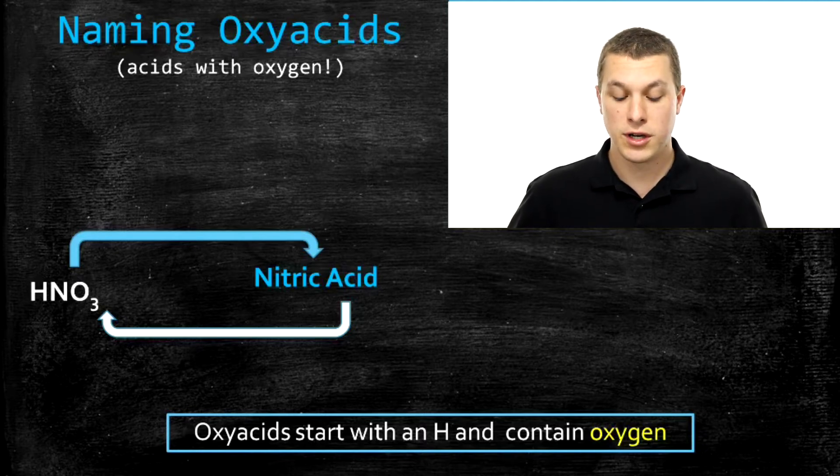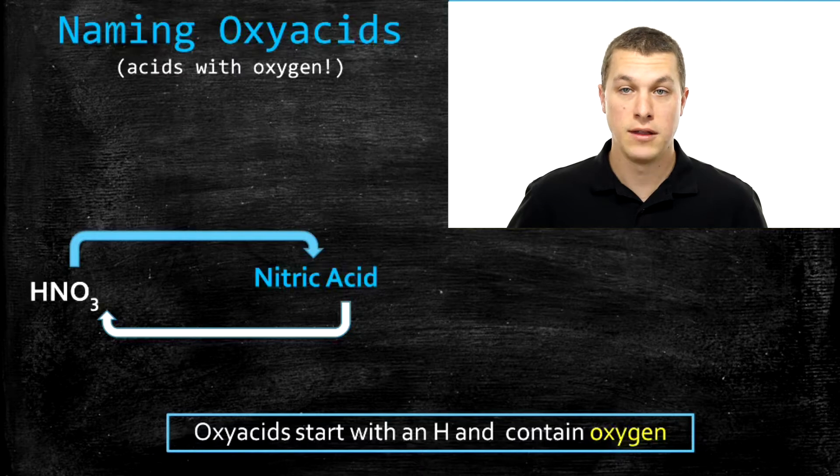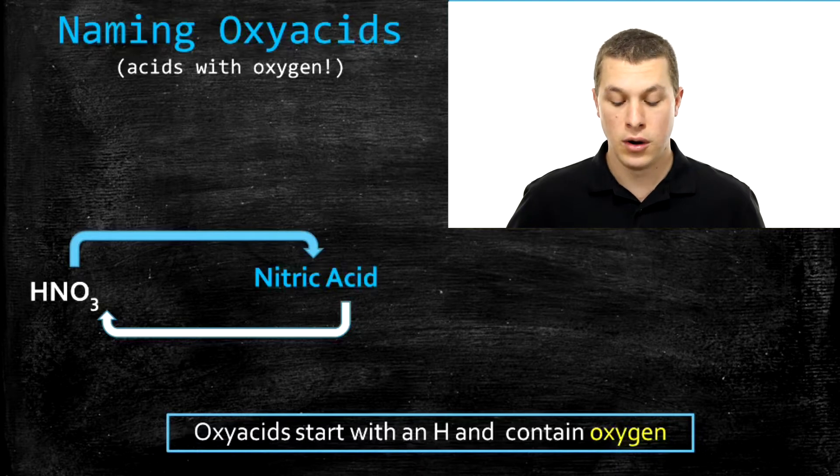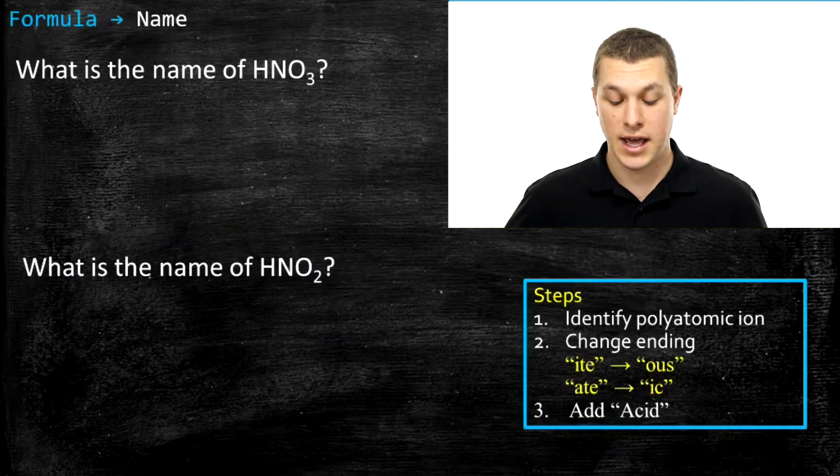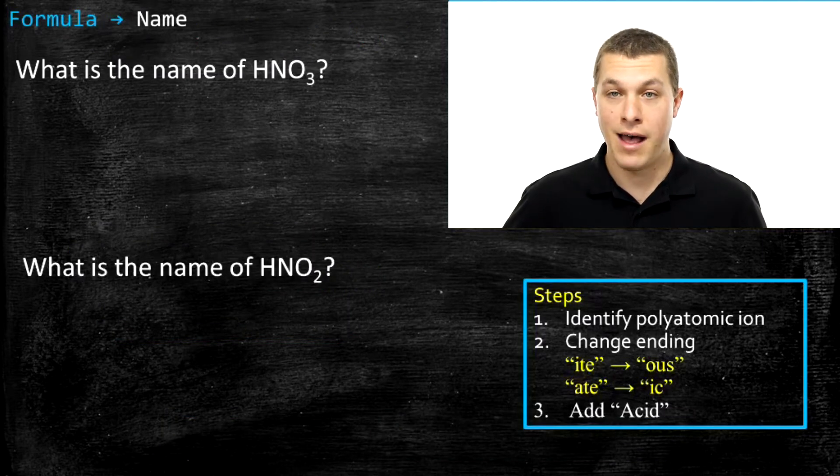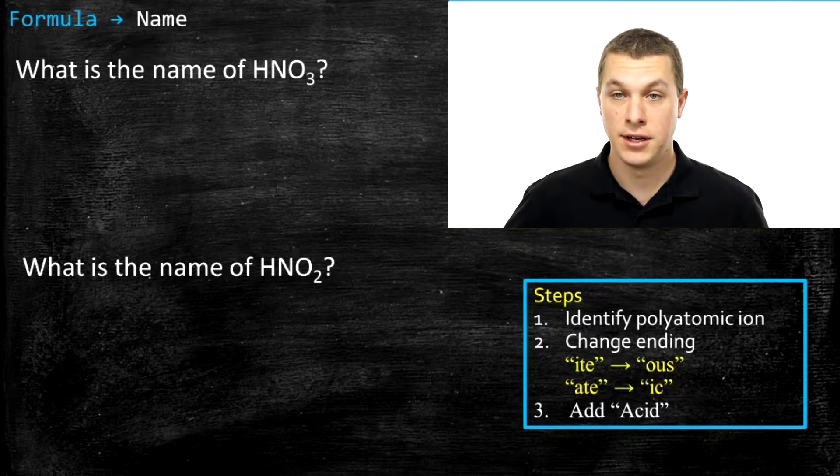What we're going to do is go back and forth between writing the name and the formula. In the first part of the video we're going to start with the formula and write the name for these oxyacids. And in the second part we're going to start with the name, like nitric acid, and go back to the formula. So let's take a look at how we could name nitric acid, and then compare that to this other acid HNO2.